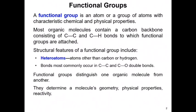A functional group is basically an atom or a group of atoms with characteristic chemical and physical properties. A lot of organic molecules contain a backbone called the carbon backbone, consisting of carbon-to-carbon bonds and carbon-to-hydrogen bonds, to which a functional group is bonded. These functional groups have structural features — they can contain heteroatoms. A heteroatom is basically any atom other than carbon or hydrogen.